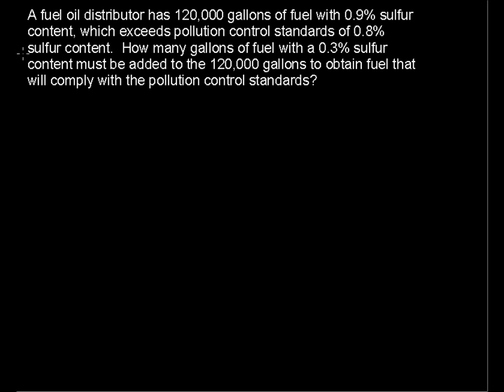A fuel oil distributor has 120,000 gallons of fuel with 0.9% sulfur content, which exceeds pollution control standards of 0.8% sulfur content. How many gallons of fuel with a 0.3% sulfur content must be added to the 120,000 gallons to obtain fuel that will comply with the pollution control standards?